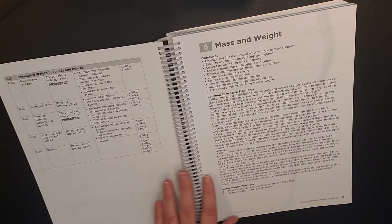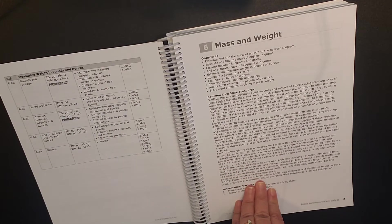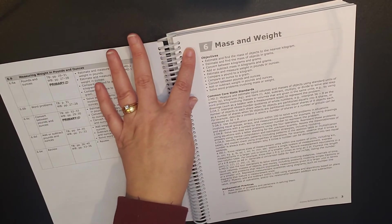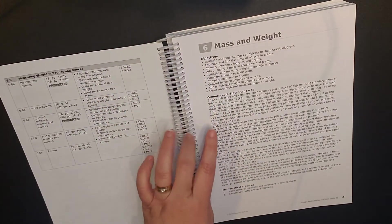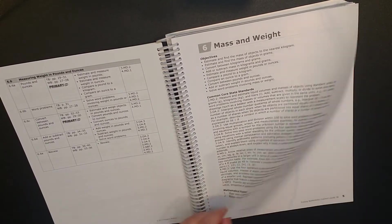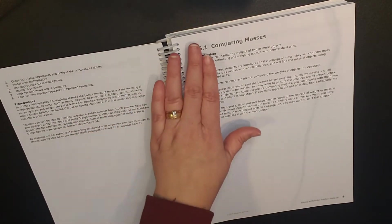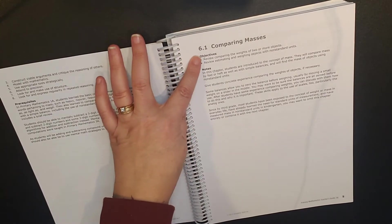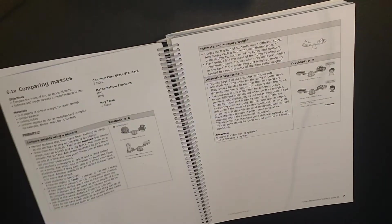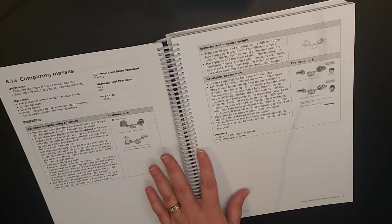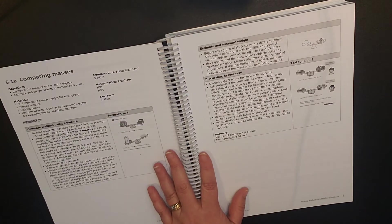When you come over here, it shows you for each one of these concepts. Here's your textbook, workbook, and then if there's primary digital pieces that are available. So now let's get into how they anticipate you teaching the lesson from this book. For example, we are now on unit six, mass and weight. Here's your objectives. Here's your common core standards.